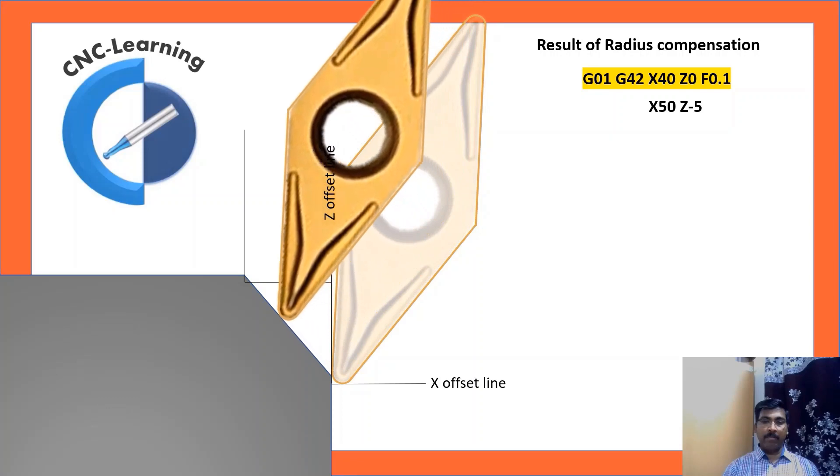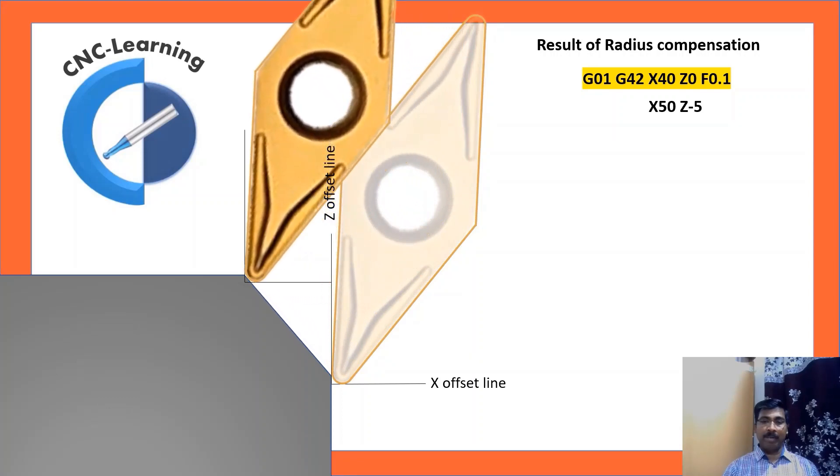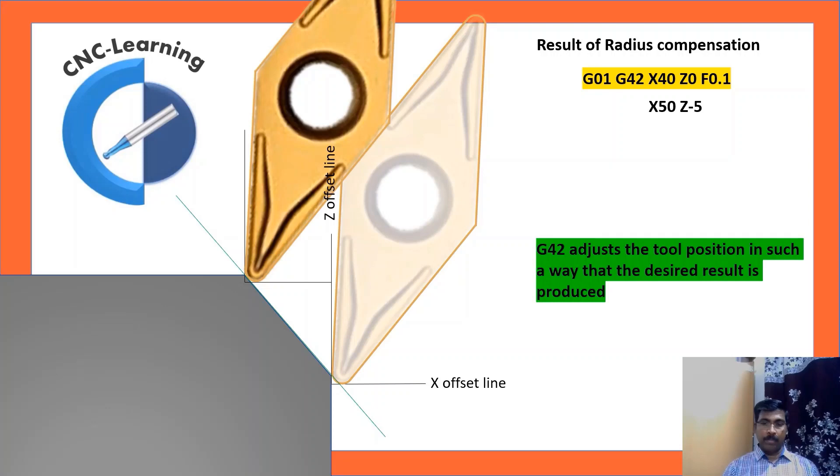X50Z-5 for doing the chamfer. Now if you see the tangent line connecting two points will be exactly matching with the chamfer line. G42 in this case adjusts the tool position in such a way that the desired result is produced.